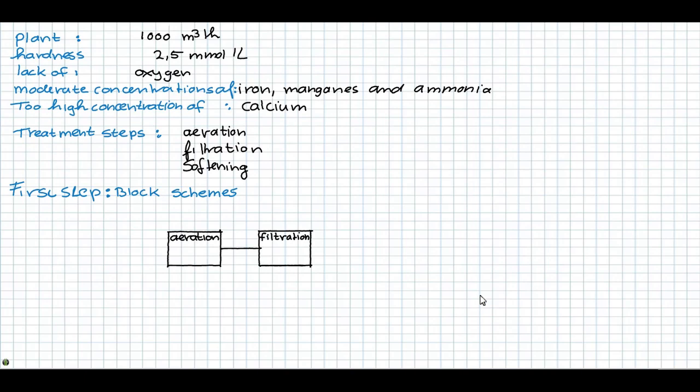In the block schemes, the first step of the design, we identify the order of the treatment steps and the alternative solutions. So I draw already two blocks of aeration and filtration, and here we choose the option with pellet softening.